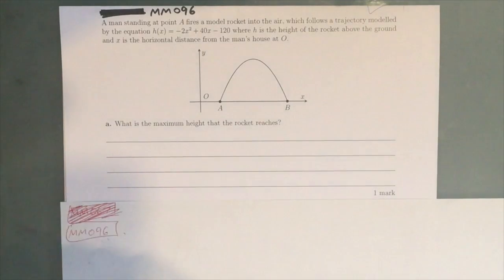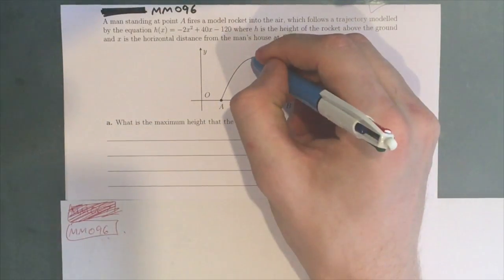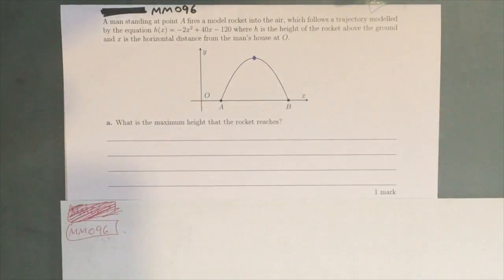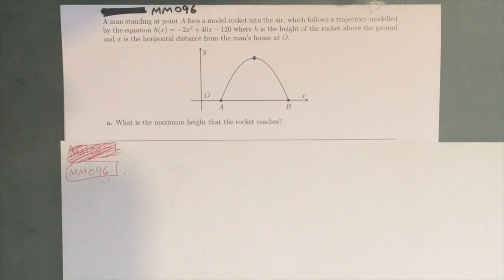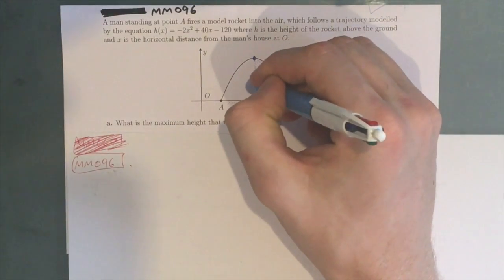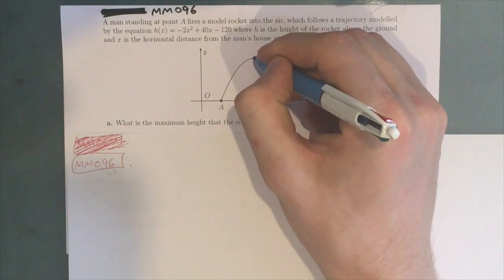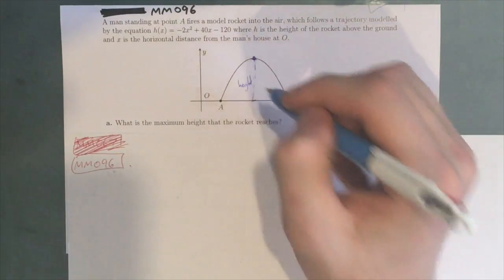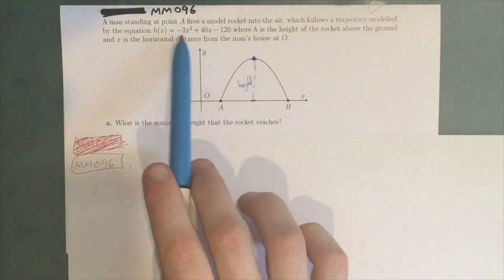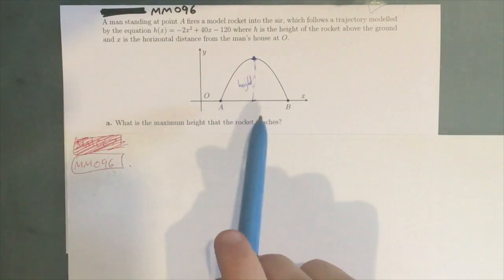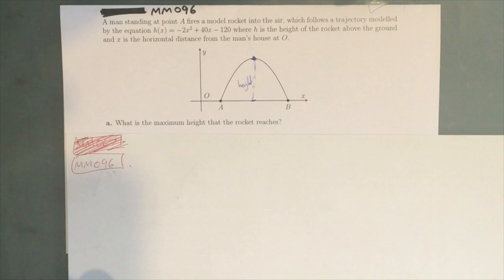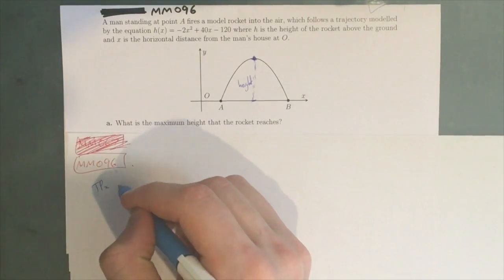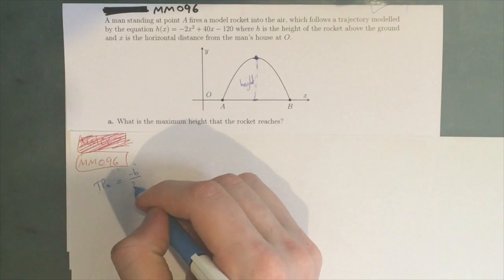So what is the maximum height that the rocket reaches? What we're talking about here is this point, which is also the turning point. We need to find out how high this section is. We have the equation of the graph and we know how to find the x-coordinate of a turning point, which equals -B/2A.